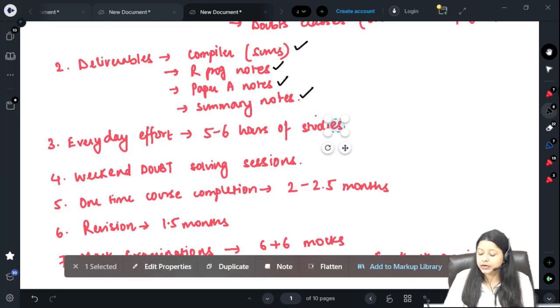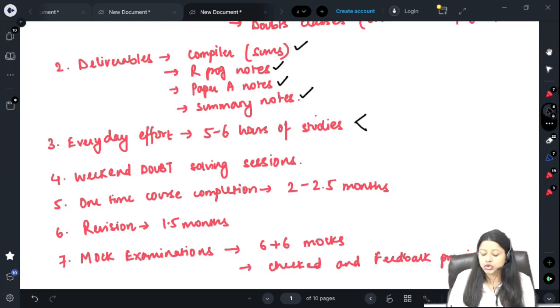It should be divided into 2 parts. You should at least spend 1 to 1.5 hours for your paper B which is R programming and rest you can give 4 to maybe 5 hours to paper A.